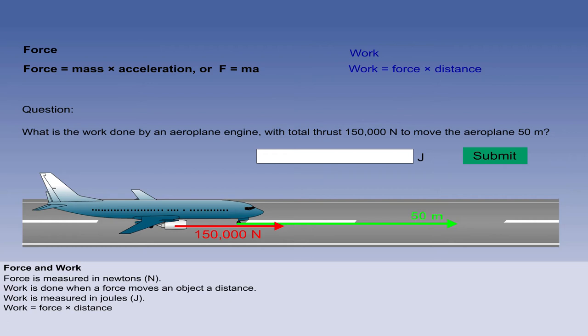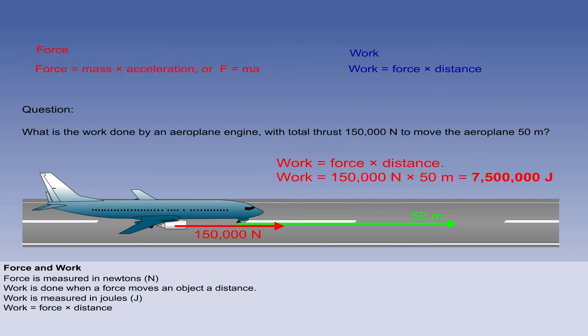A force is said to do work when it moves an object a distance. The amount of work done depends on the size of the applied force and the distance it moves the object. The unit of work is the joule. Calculate the work done in this question. Type in your answer and click on the submit box. Work is found by multiplying the size of the force by the distance the force moves the object.